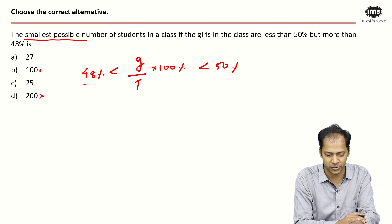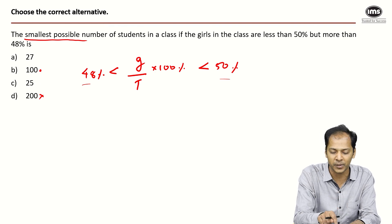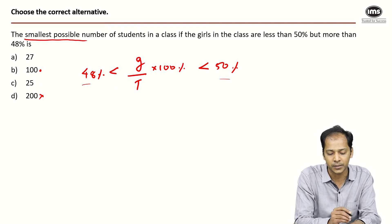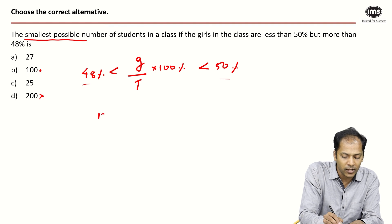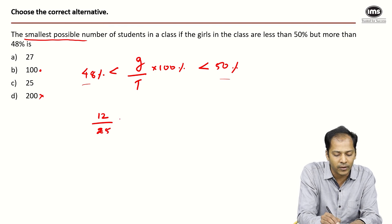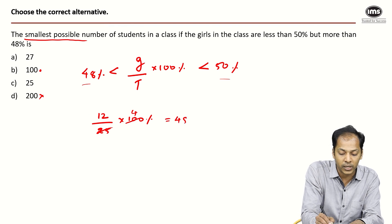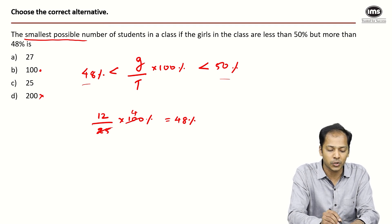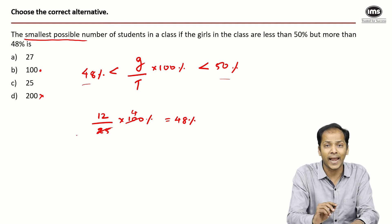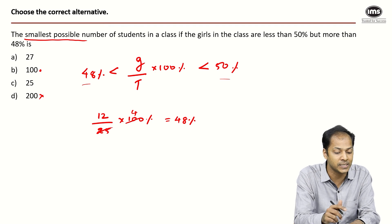I'll check if 25 can give me a certain percentage. Half of 25 is 12.5, the integer just less than that is 12. If the girls are 12 out of 25, the percentage is 12 times 4, that is 48% exactly. But the number of girls had to be more than 48%, so 25 can't give me a percentage between 48% and 50%. Option C is eliminated.